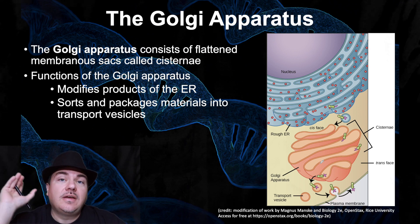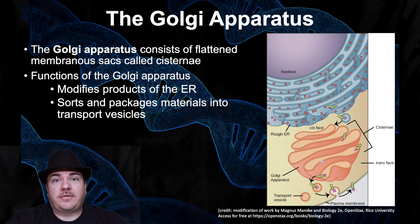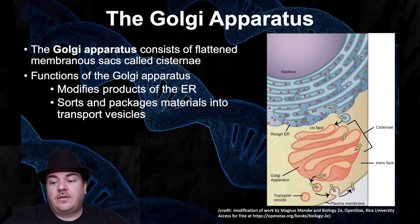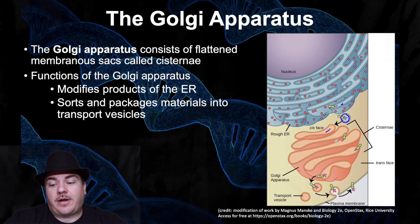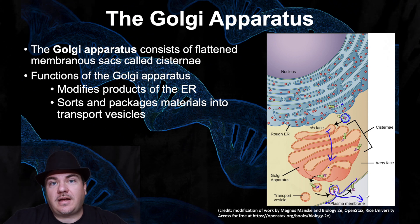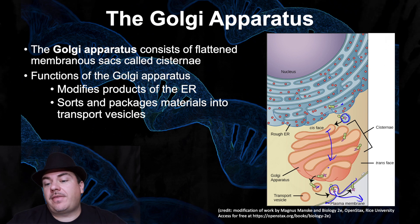So let's say you have a protein that needs to be secreted from the cell. It's going to be built in the rough ER, then it goes into a transport vesicle, from there to the Golgi apparatus, and after passing through the Golgi it goes into another transport vesicle and then to the plasma membrane. That's the pathway for a protein that's going to end up leaving the cell.